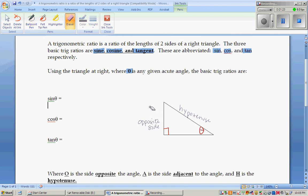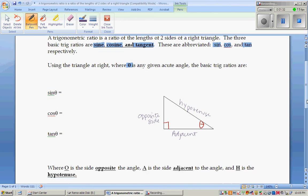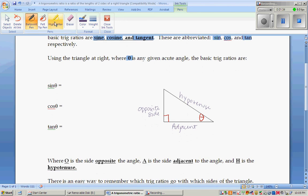So, the only side left is the adjacent side, the side that is next to your angle theta. And you want to know that O stands for opposite, A stands for adjacent, and that H stands for the hypotenuse.